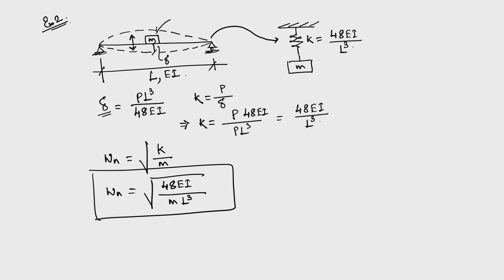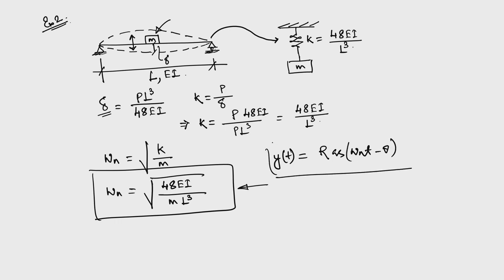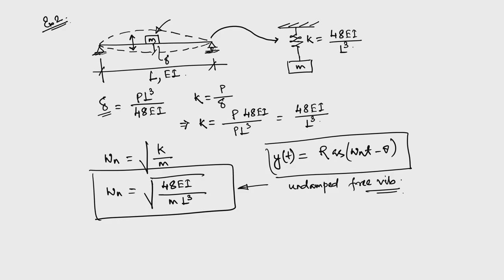When the mass is applied at the midpoint, the beam vibrates with this natural frequency. The response y(t) = r·cos(ω_n·t - θ) - this is the complementary function for undamped free vibration. In our next class we will continue this topic, considering damping and exploring other characteristics of natural frequency and how they affect the solution. Thank you very much.